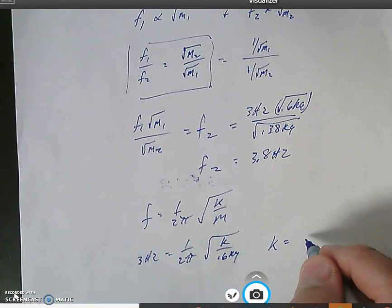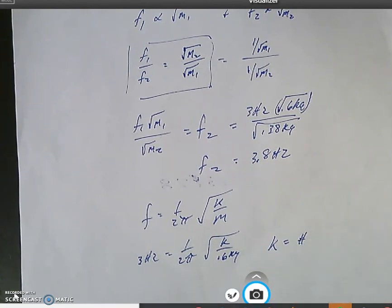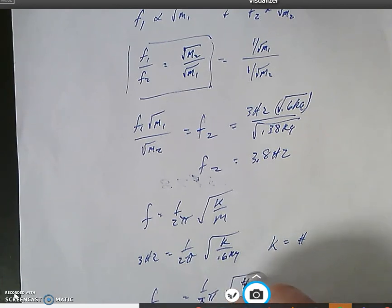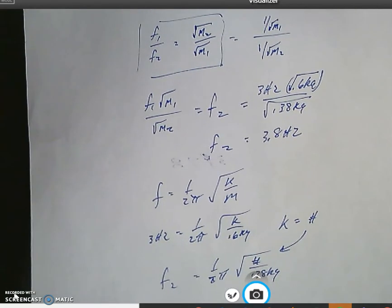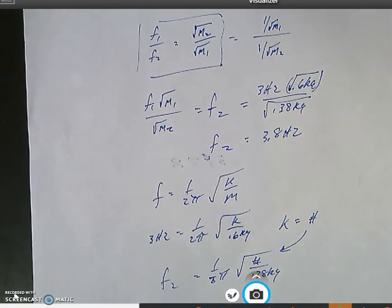and then I put it back into my frequency equation using the new mass. So f2 would be 1 over 2π times whatever number I get from up here, square root k over m, and this m would then be 0.38 kilograms. And I would get the exact same thing if I did that.